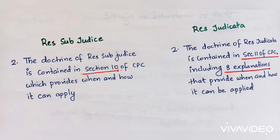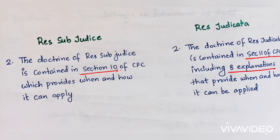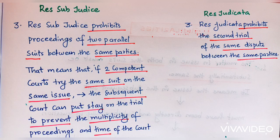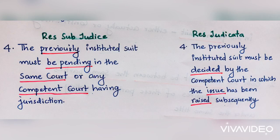Difference number three: res sub judice prohibits the proceeding of two parallel suits between the same parties. That means if two competent courts try the same suit on the same issue, the subsequent court can put a stay on the trial to prevent multiplicity of proceedings. In the case of res judicata, it prohibits the second trial of the same dispute between the same parties.